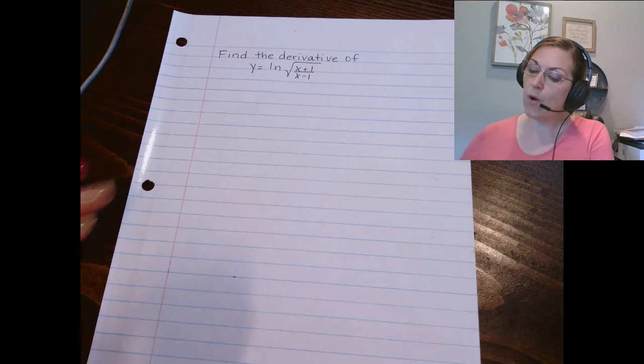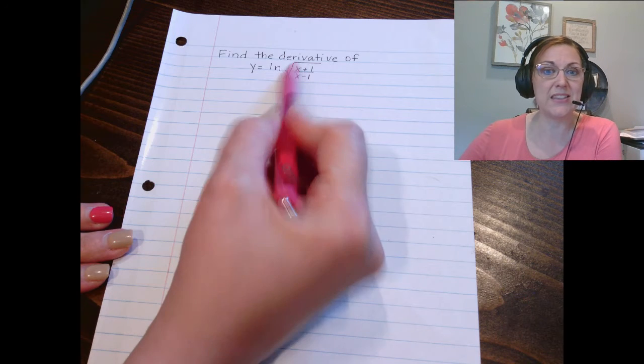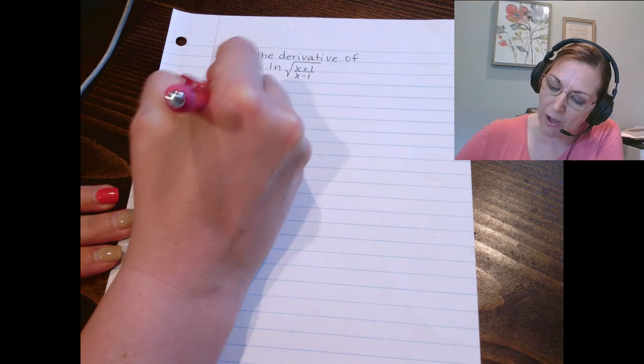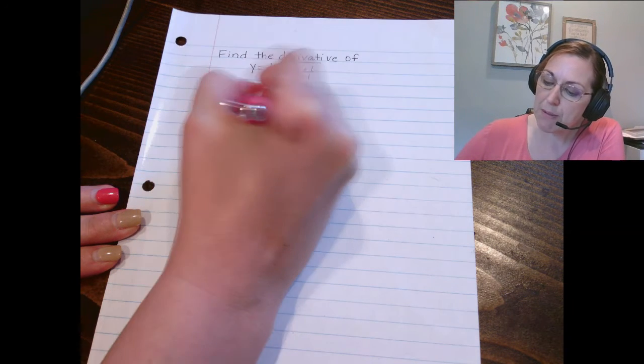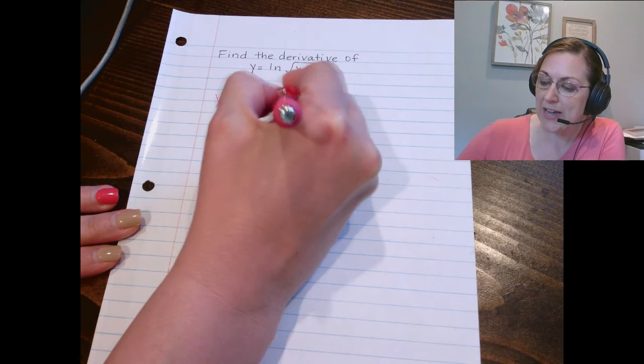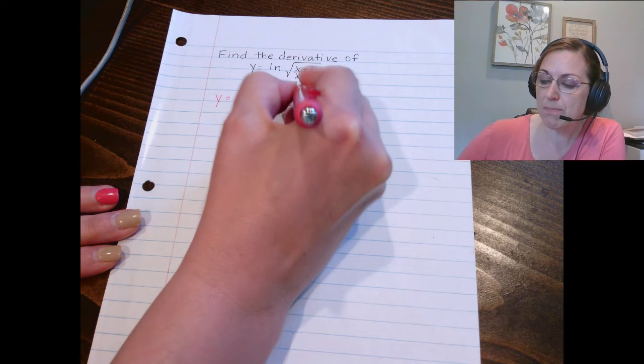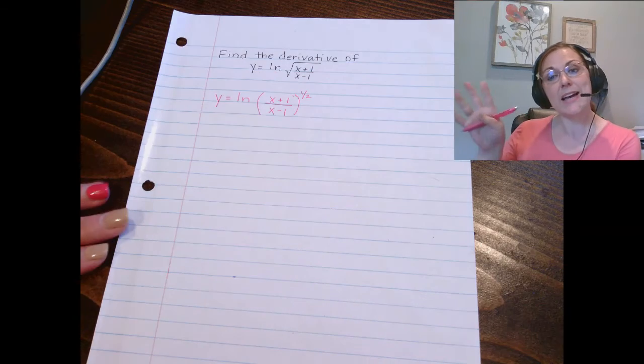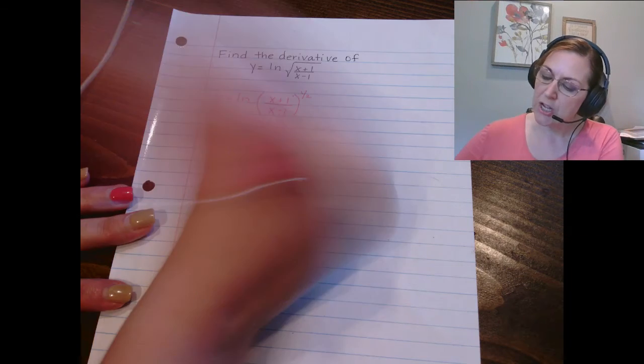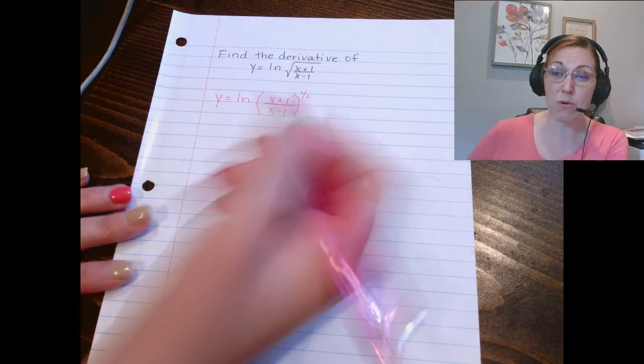For instance, I want to go ahead and rewrite this square root as a one half power. Now, if you're remembering back to your natural log properties, you'll remember that those exponents become coefficients. So instead of having a one half power, which by the way would be not fun to take the derivative of,